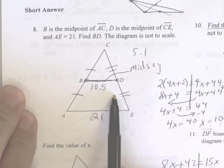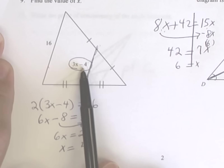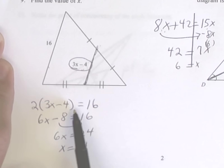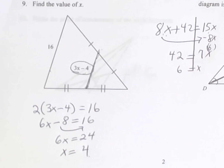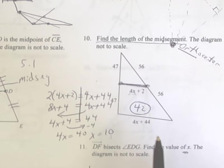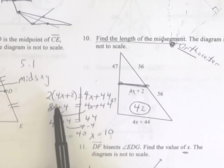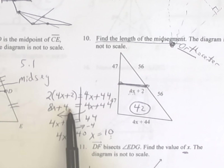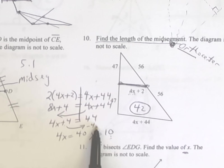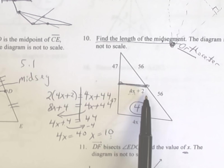Number eight is called a mid-segment because it's in the middle — midpoint, midpoint, midpoint — so it's half of the opposite side. Number nine is also a mid-segment: two of these equal one of those. For number 10, it's a mid-segment so two of these equal the bottom. Distribute, subtract 4x, subtract 4, divide by 4 — you get x equals 10. But they want the mid-segment: 4 times 10 is 40, plus 2 is 42.